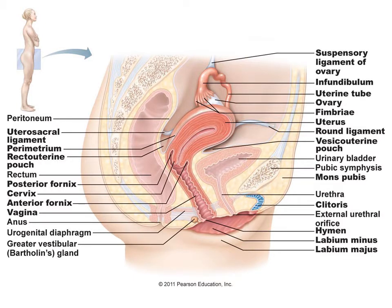This is a side view of the female internal reproductive organs. In terms of their placement, they're right in the middle. Starting on the left side of the screen, you see the rectum and then the anus. In front of that is the uterus, with the connection of the vagina which connects to the outside.